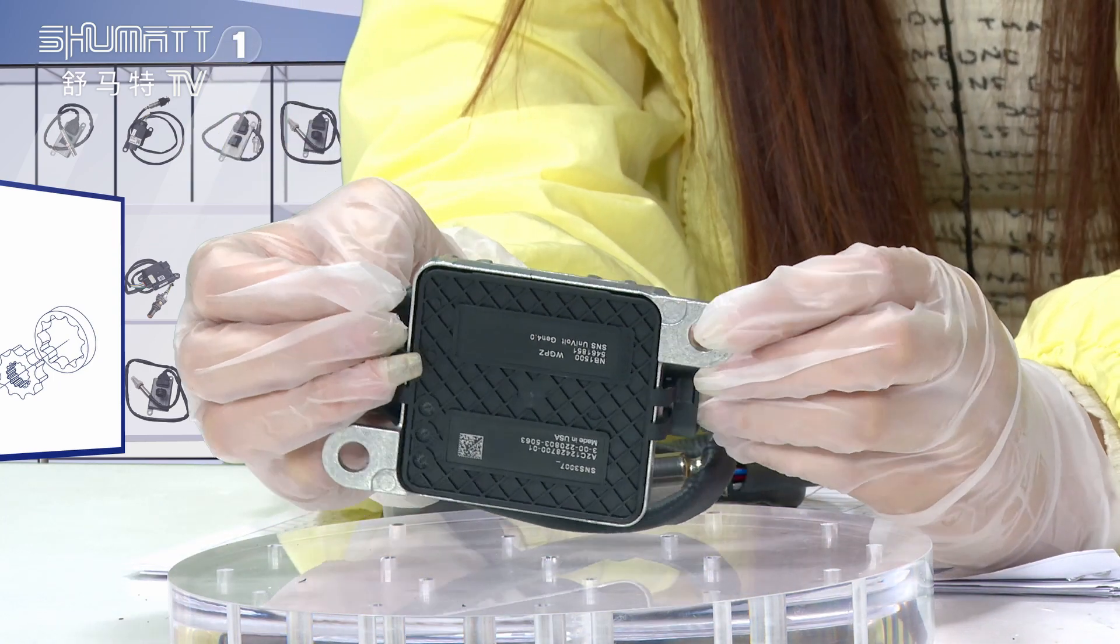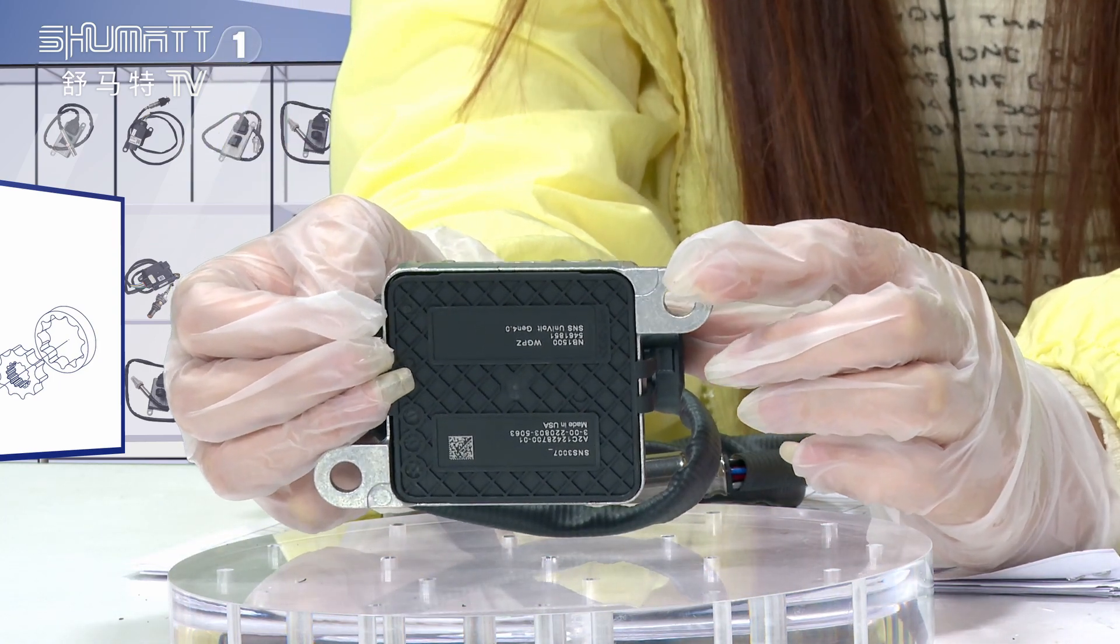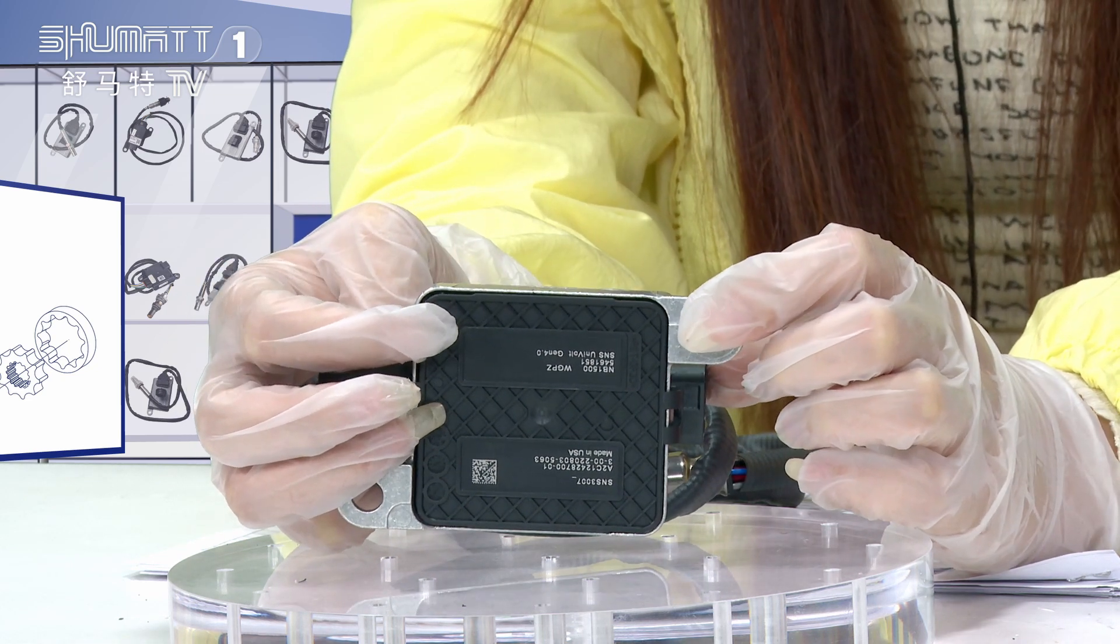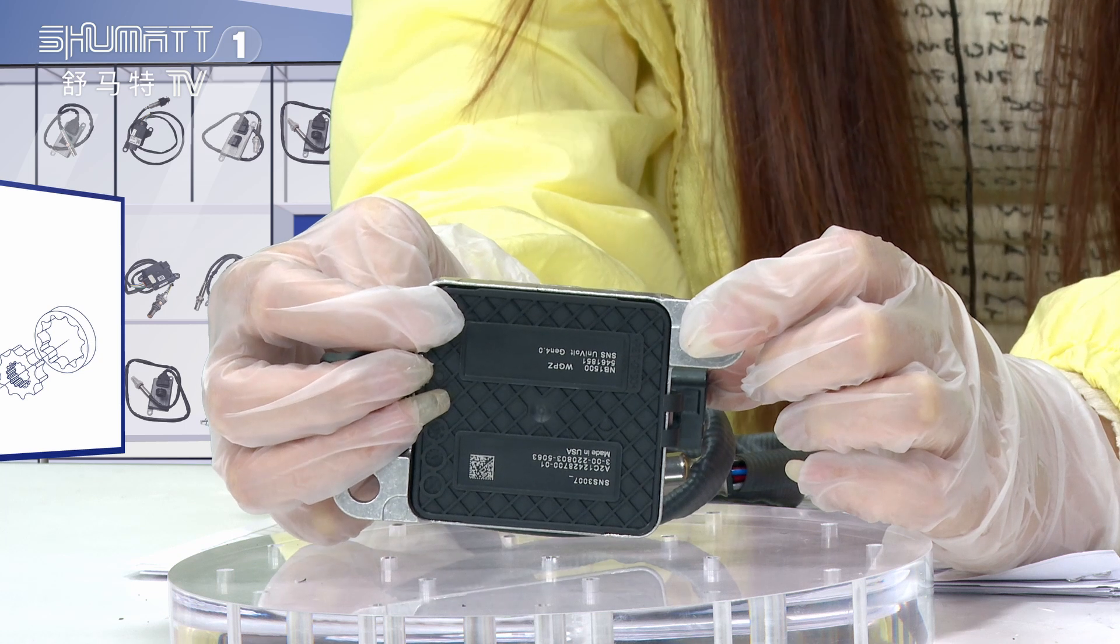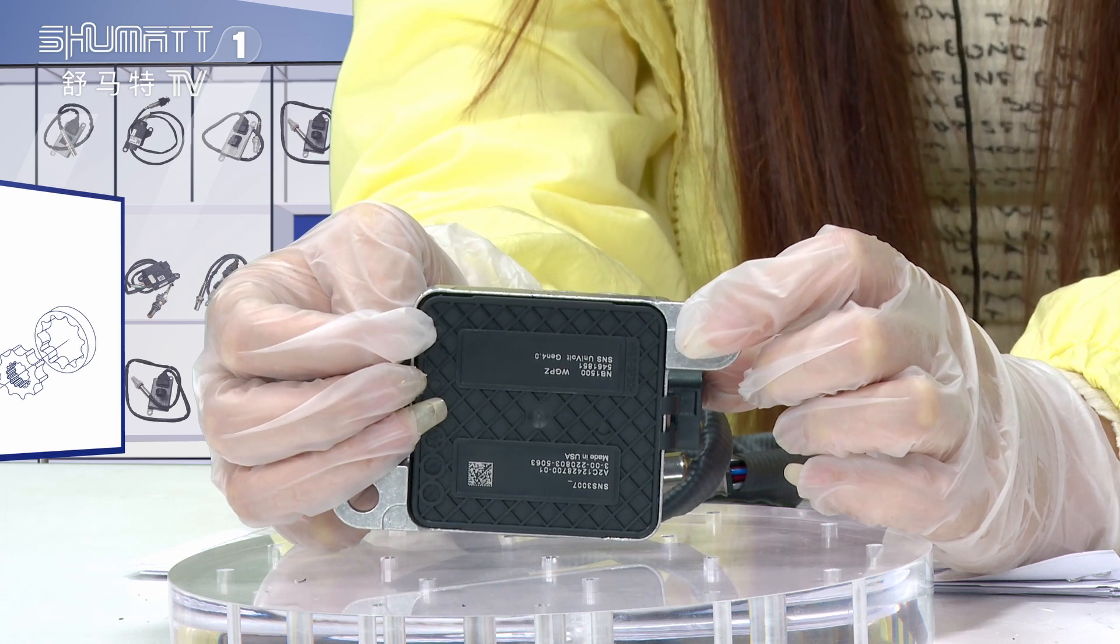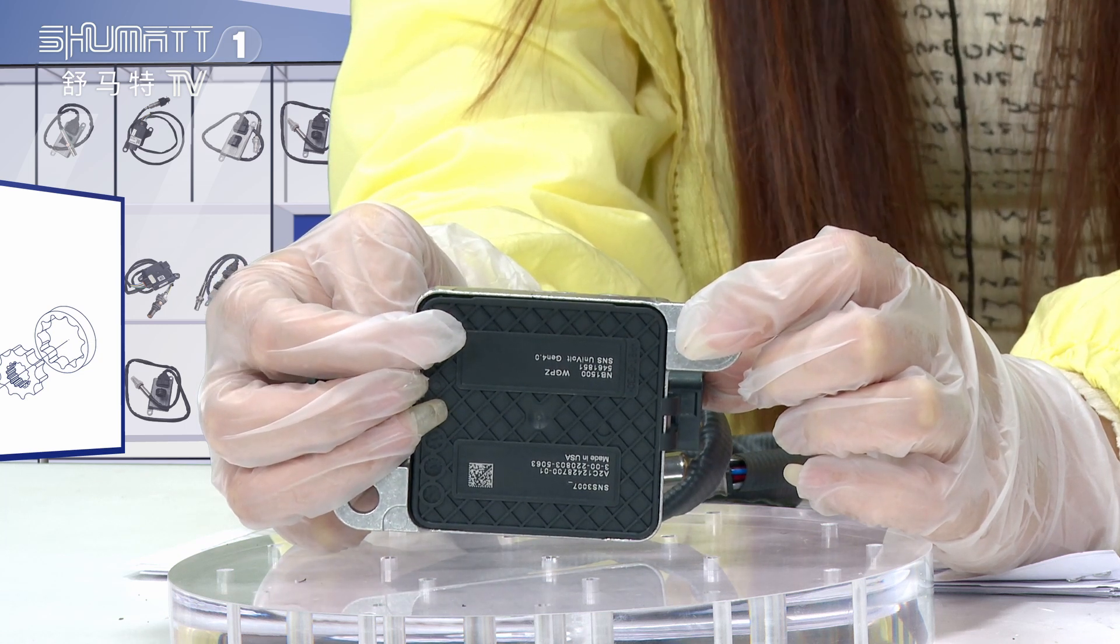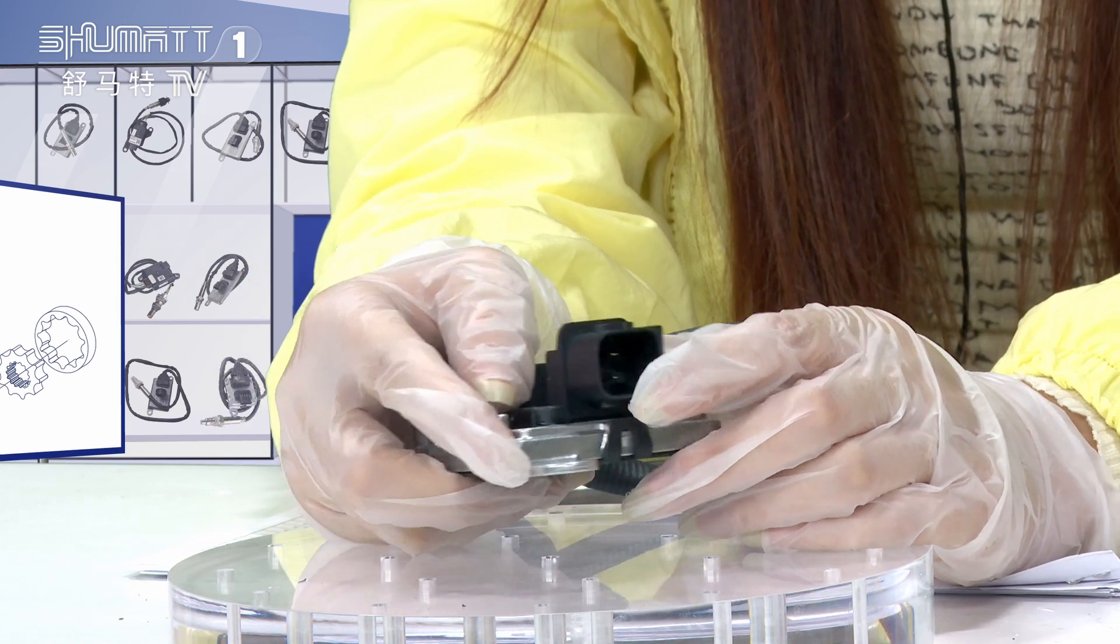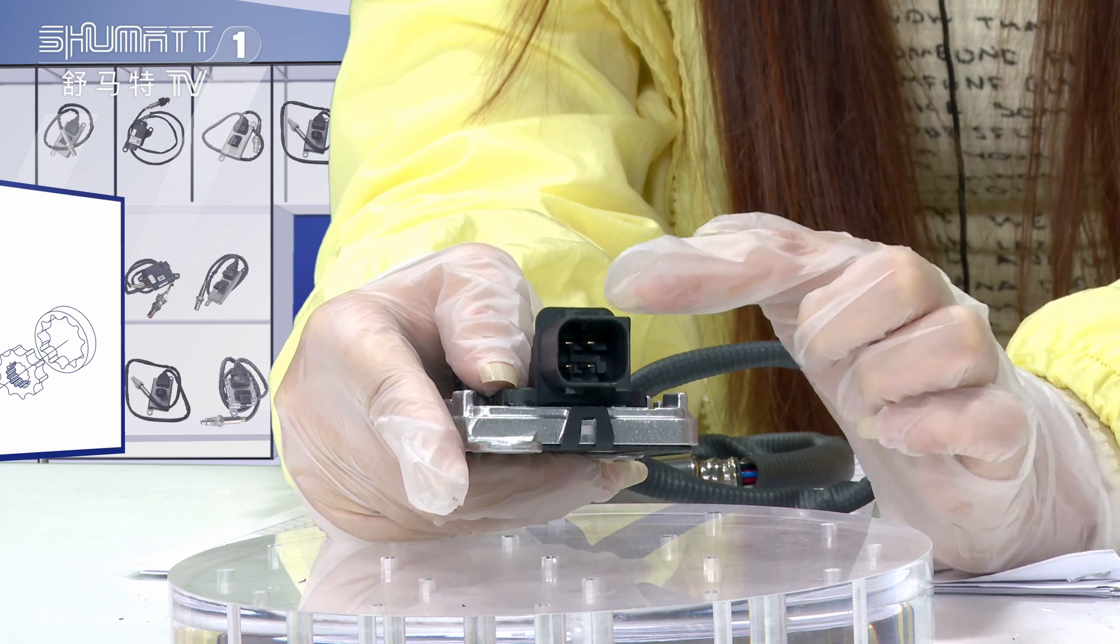The last part is the control module. On the back of this control module, you'll see label information including the QR code, CE, SN, product code, etc. When I move to this angle, you'll find the connector plug here.